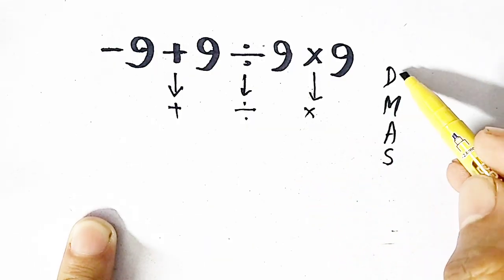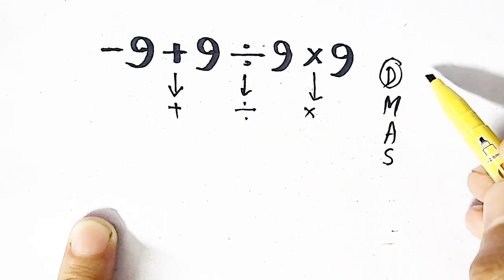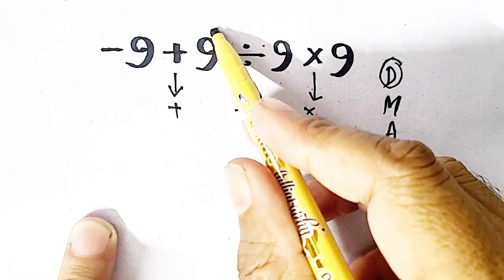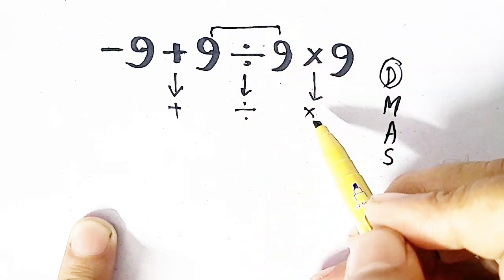So according to order of operation, we have to handle division first. So we have to divide this one as priority.